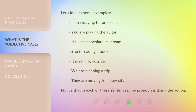Let's look at some examples. I am studying for an exam. You are playing the guitar. He likes chocolate ice cream. She is reading a book. It is raining outside. We are planning a trip. They are moving to a new city. Notice that in each of these sentences, the pronoun is doing the action.